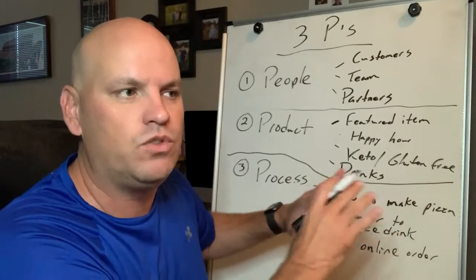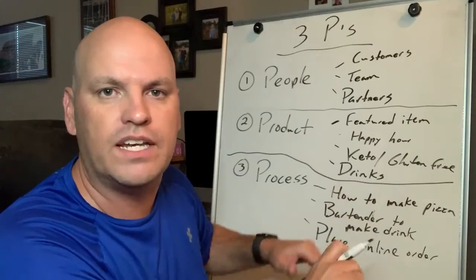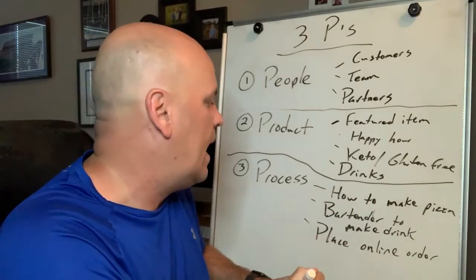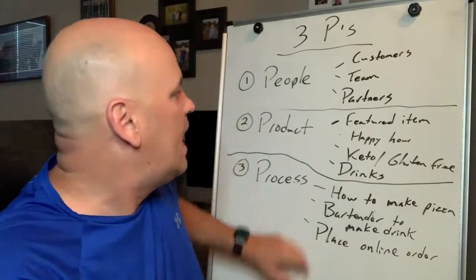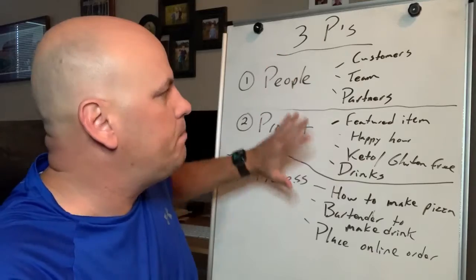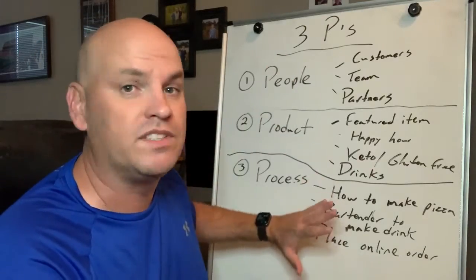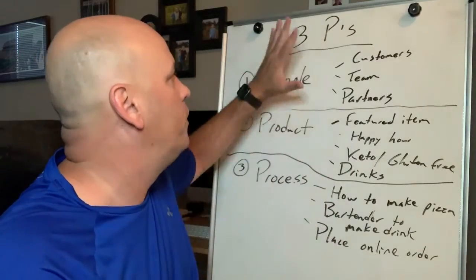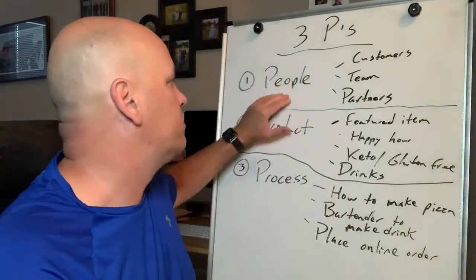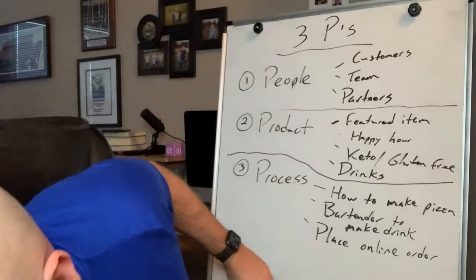If you could think of something that would be really cool if people saw this or people knew about this, that's the kind of content to share. So that's my three P's of what to post when you don't know what to post. I always come back to these — people, product, process.